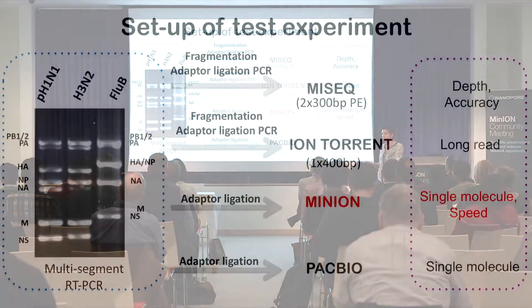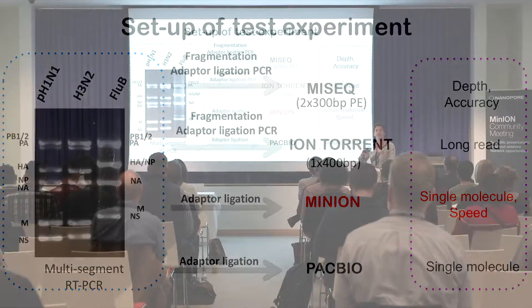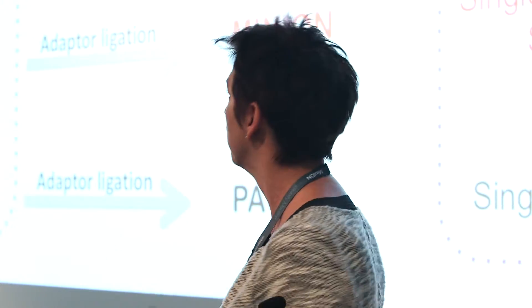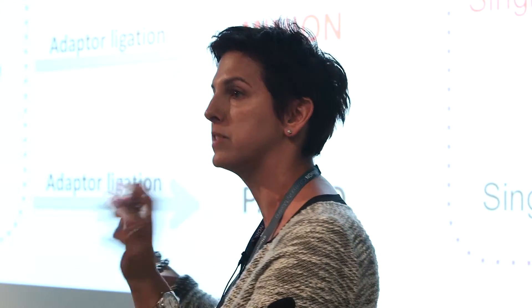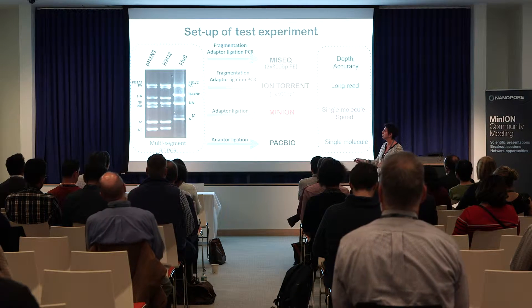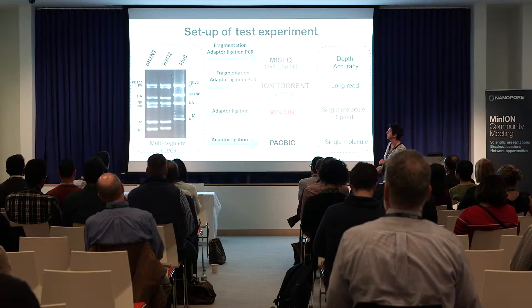First I'll show what we did with lab strains to make sure it worked. Flu is great in that the segments are small, so you generate short amplicons from the cDNA. Also, each segment has conserved ends across strains and subtypes — just not across types, so Flu A versus Flu B. Across Flu A you can use exactly the same primers to amplify everything. This is the multi-segment RT-PCR, giving us the eight segments for Flu A and eight for Flu B.